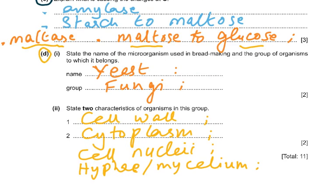Part D1: state the name of the microorganism used in bread making and the group it belongs to — that is yeast, belonging to fungi. State two characteristics of organisms in the fungi group: they have a cell wall made of chitin, they have cytoplasm and cell nuclei, and they have hyphae and mycelium, which are thread-like structures.